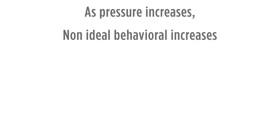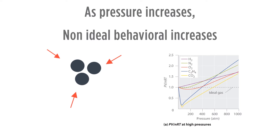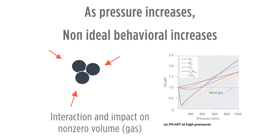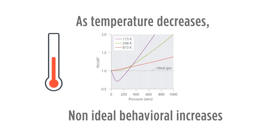What happens with gases as we increase pressure is that the non-ideal behavior of the gas also increases. If we think about pressure increasing, the molecules of the gas are going to have to be forced closer and closer together. This is going to change that idea that they're not going to get close enough to interact. It's also going to have an impact on the non-zero volume assumed for the gas. We also see an impact on the non-ideal behavior by a decrease in temperature.